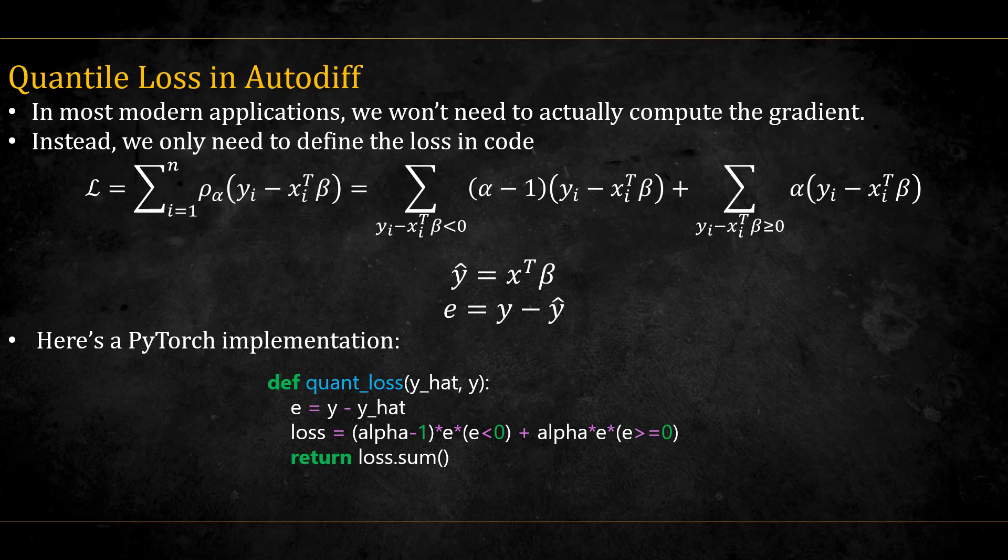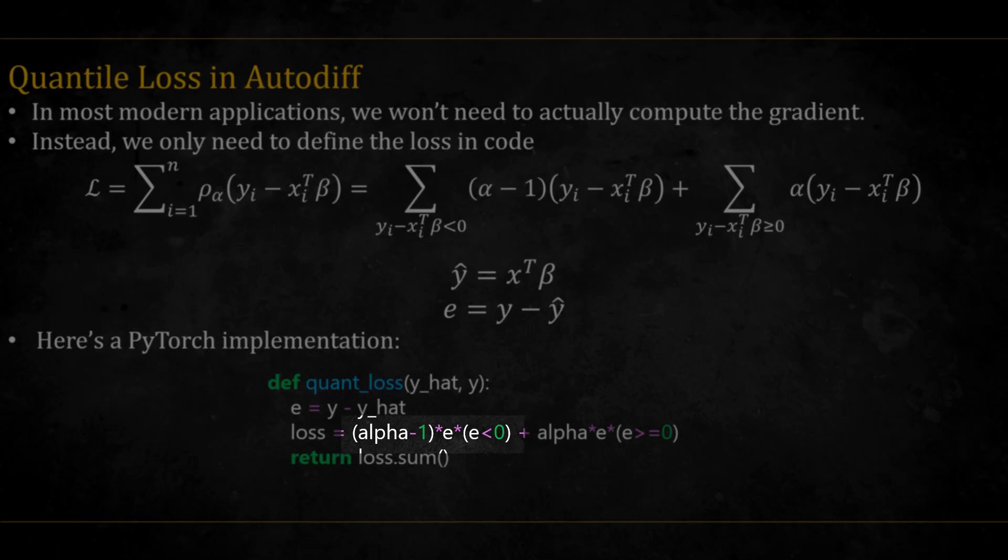In most modern applications, we won't actually need to calculate the gradient. It's enough to define the loss in code. Here is the PyTorch implementation of the loss, where y hat is x beta. We denote here the residuals by the letter e. Notice how we multiply them by alpha minus 1 if they are below zero, and by alpha if they are above zero. And then we sum them.